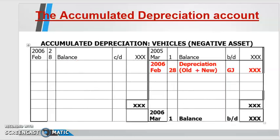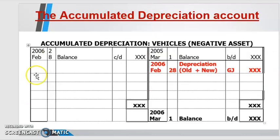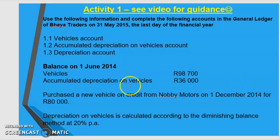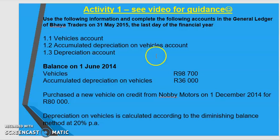There are three accounts: asset, accumulated depreciation, and depreciation. Depreciation is an expense. Accumulated depreciation is a negative asset, so it has a credit balance. I'll show you everything — how to do your activities. The video is going to be based on this one here, and I'll try to do a video for the second one as well. There's no work from your textbook; it's going to be on your slide, and I've given you the answer books as well.